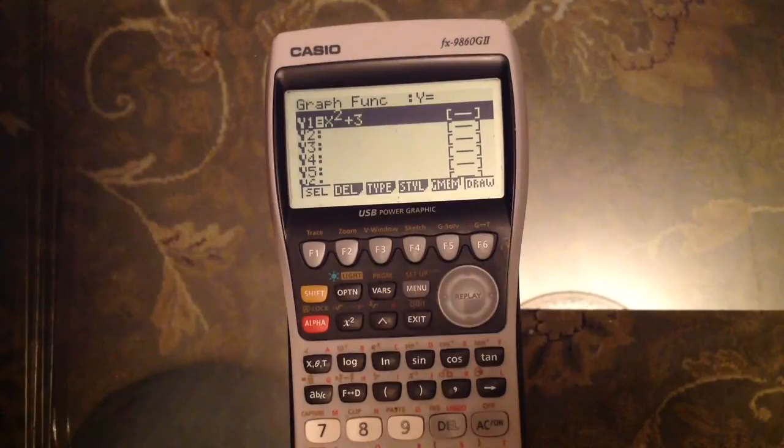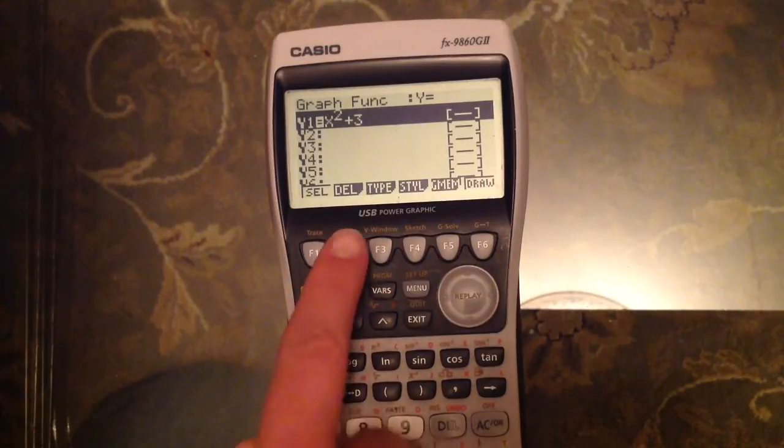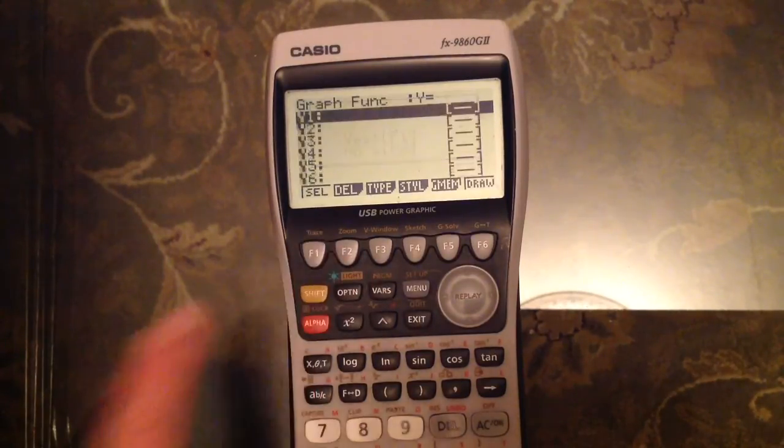We've already got a graph in there, this is a Cartesian equation, so I want to delete that one first, otherwise it's going to appear on my parametric graphs. So just pressing delete, and yes, I'll delete that one.